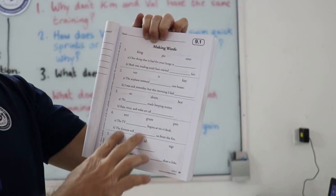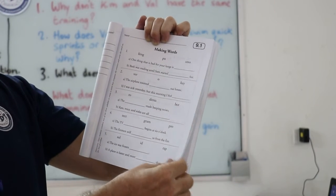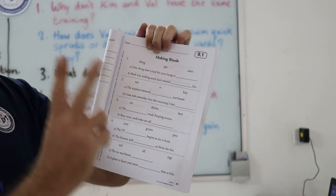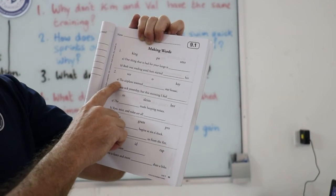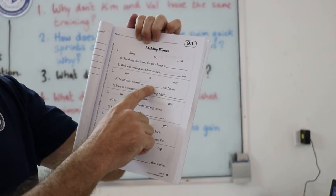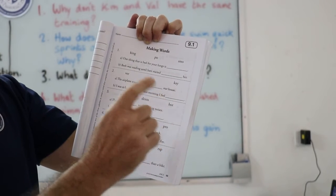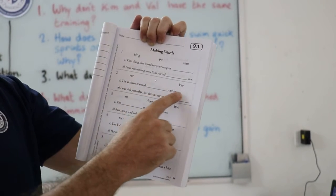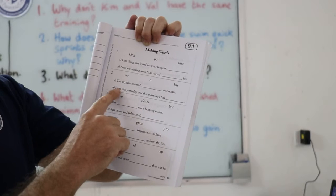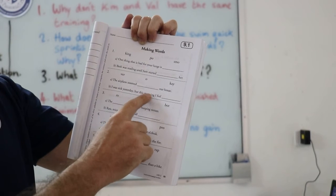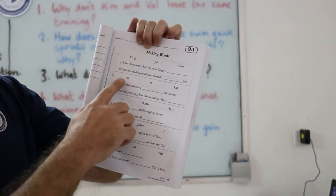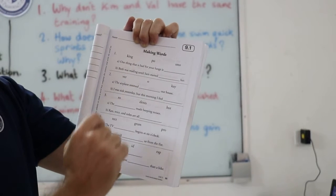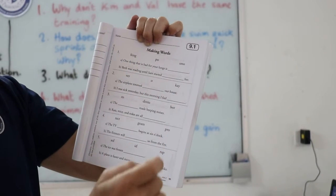Now, if you could go through all the other questions and make up either two or three syllable words. So, number two, the airplane zoomed what? Our house. Part B, I was sick yesterday, but this morning I feel what? You have to make up the answers using these three parts of words.